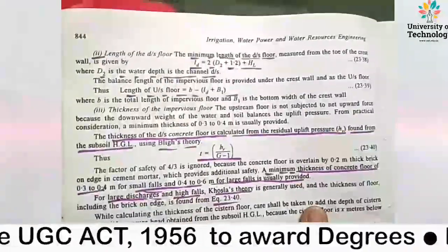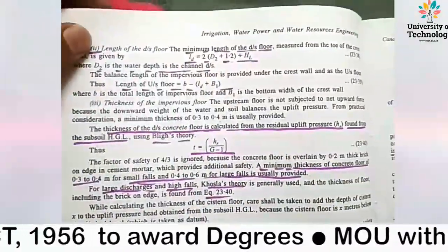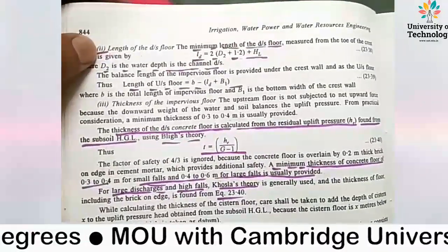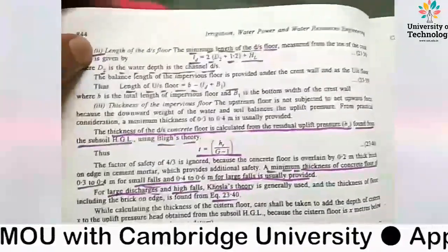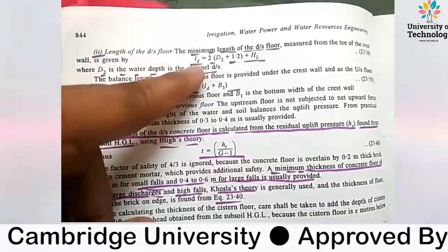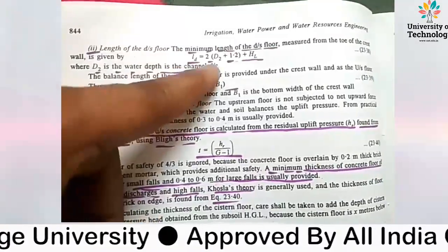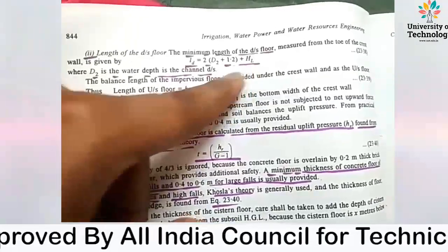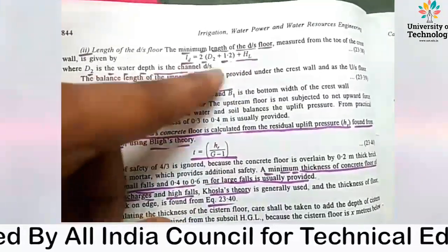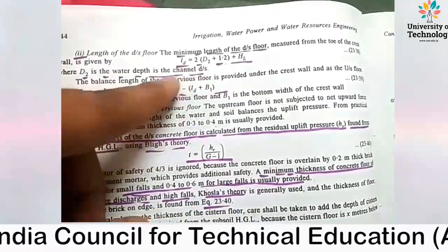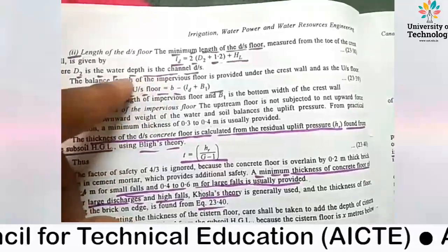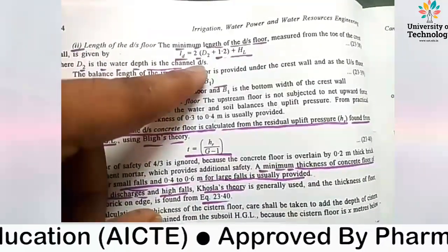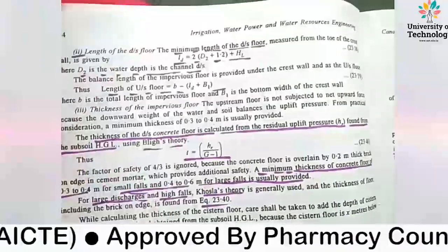The next point about the impervious floor is the length of the downstream floor. The length of the downstream floor LD is given by: LD equals 2 times D2 plus 1.2 plus HL, where D2 is the water depth in the channel at the downstream side.